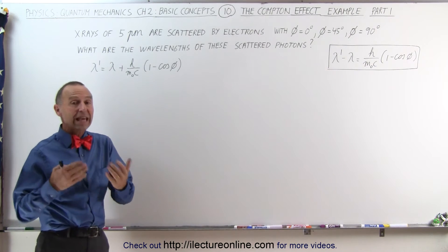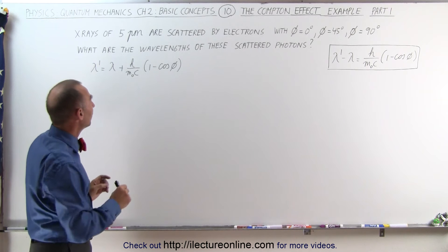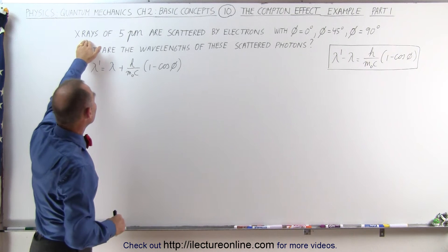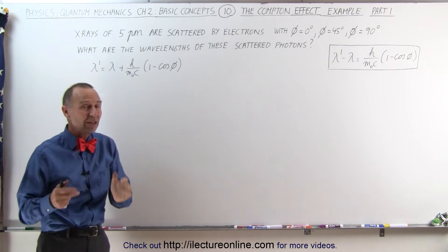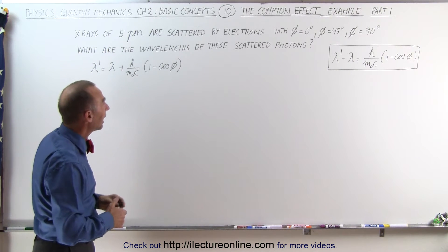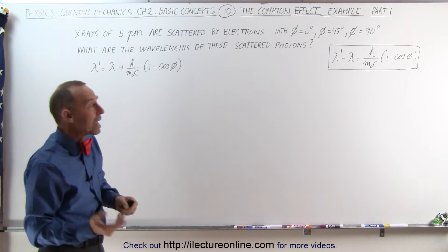Let's say that we're scattering x-rays off of a crystal and the x-rays have an incoming frequency such that the wavelength is 5 picometers, that's 5 times 10 to the minus 12 meters, and they're scattered at three angles.